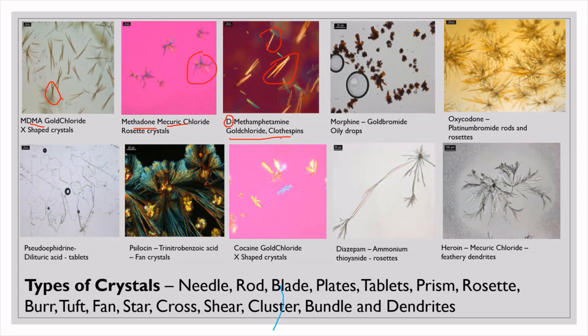Next we are having morphine. Morphine is going to form a droplet kind of crystals. These crystals are little clumsy and it is formed by gold bromide. You can see all the four reagents which are used here are a metal with halide combination. Here also we are having the same thing: oxycodone. It is also forming a certain kind of crystals which can be said as rosettes or it can also be tuft or burr. This type of crystals are formed by oxycodone. Then pseudoephedrine, a natural drug, it is been formed into tablets. These particular structures can be referred as tablets or plates. These crystals are formed by dilitheric acid reacting with pseudoephedrine.